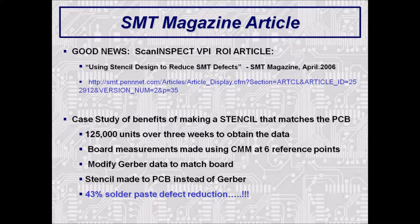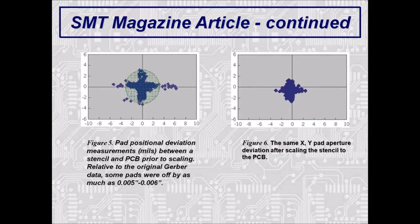A study released in SMT Magazine, April 2006, shows the benefits of looking at a circuit board before making your solder paste stencil, verifying that the CAD data matches exactly, and then modifying the Gerber data for the stencil to exactly match the board. This study was done at Motorola and showed a 43% reduction in solder paste defects simply by having the stencil exactly match the board. As we move to finer-pitched devices, the ability to modify stencil data before making the stencil is incredibly powerful.